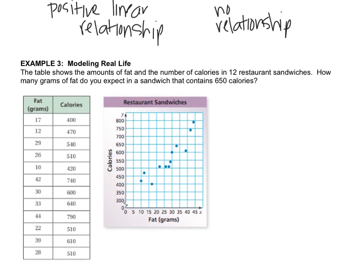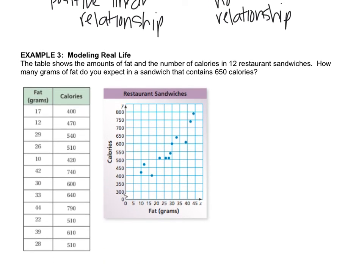The last example: a table shows the amounts of fat and calories in 12 restaurant sandwiches. The scatter plot is already made for us — these dots are the data. Someone already added a break, used equal spacing for the scale, and labeled everything. It's a well-made scatter plot.